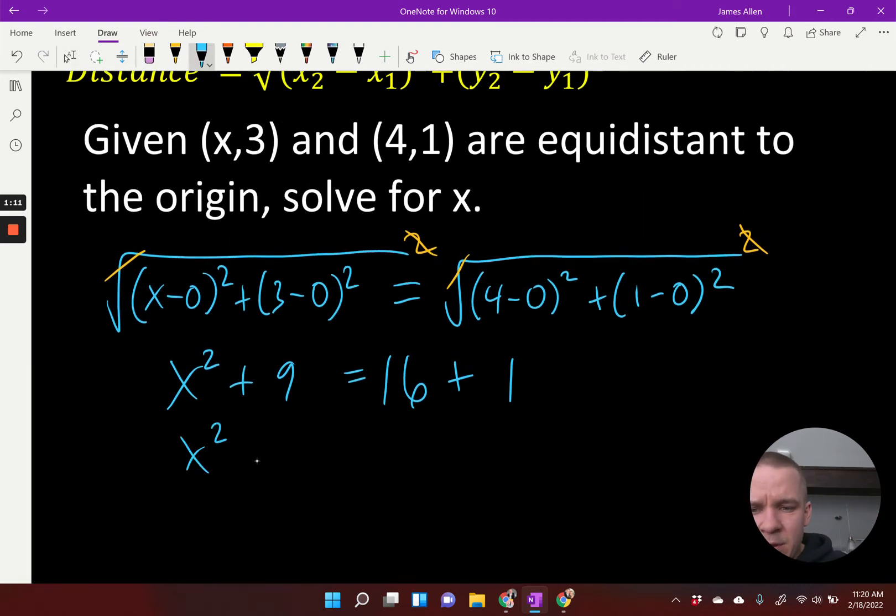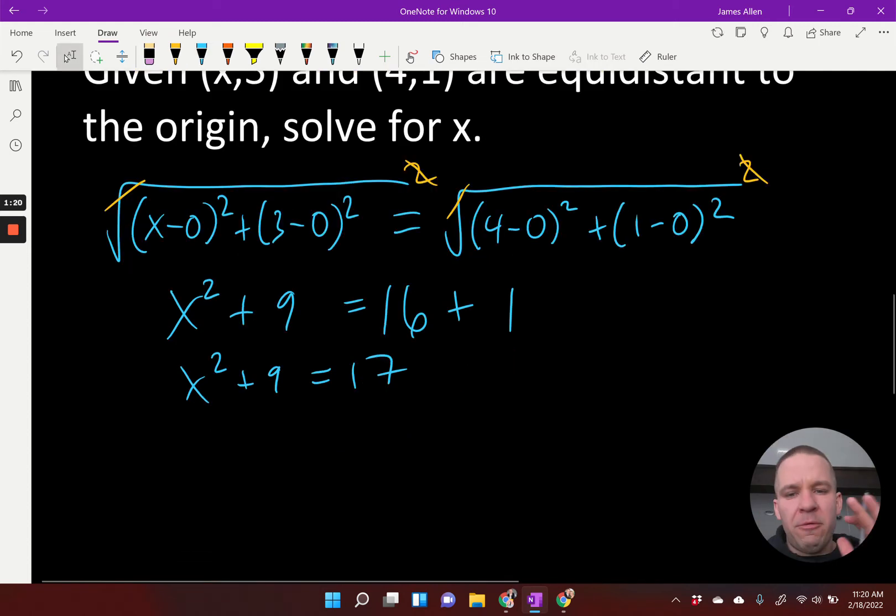I've got x squared plus 9 equals 17. Now, I only have a quadratic term and a linear term. So I can use square roots to solve this one. But first, I've got to put everything on one side except for the x squared. So I'm going to have x squared equals, if I subtract 9, I get 8.